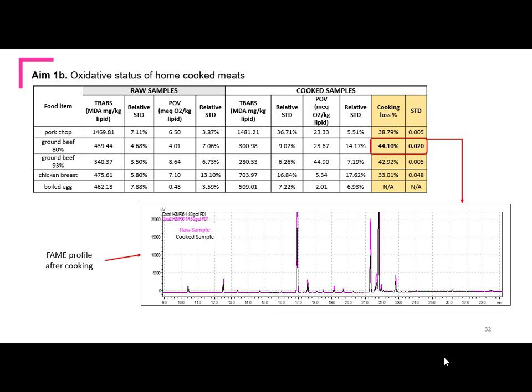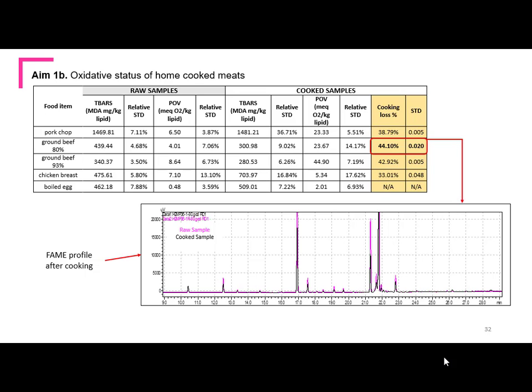This is a chromatogram example. The raw sample is shown in pink and has high fat content. When it is cooked, this profile changes because it starts to be oxidized. For hamburger, we have up to 95%, 90%, and 80% lean categories. In general, this is the information from the database — we have more than 100 items and want to continue updating it.